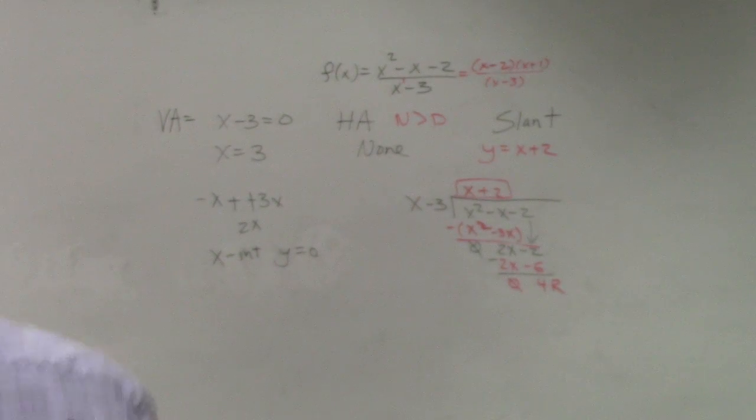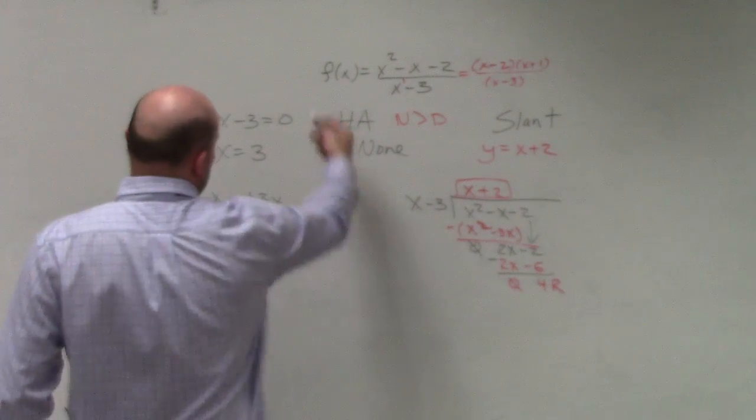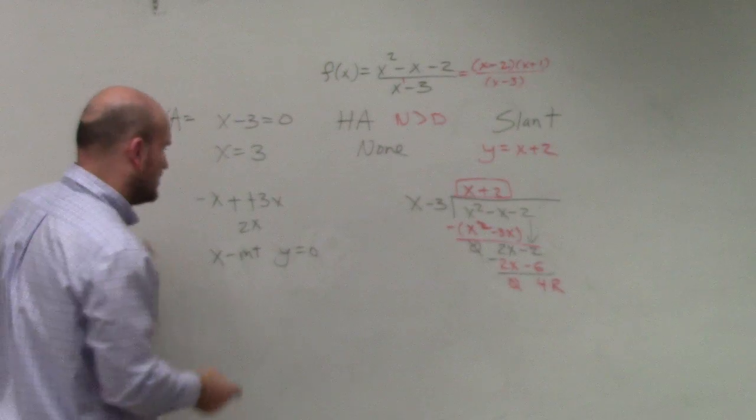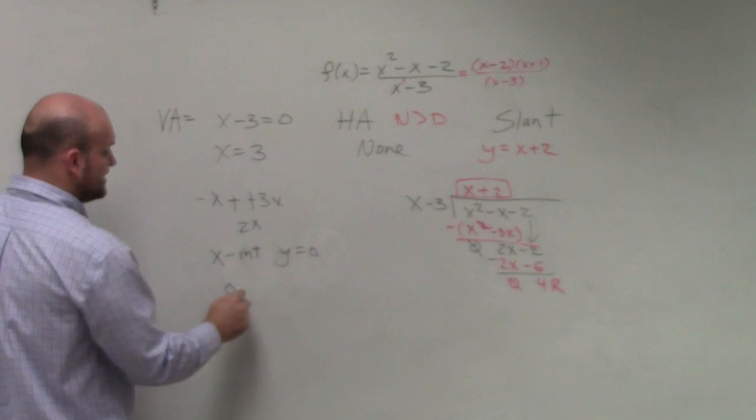At the x-intercept, y is equal to 0. Now, we don't have a y, we have an f of x, but they're interchangeable with one another. So what I'm going to do is I'm just going to set this equal to 0.